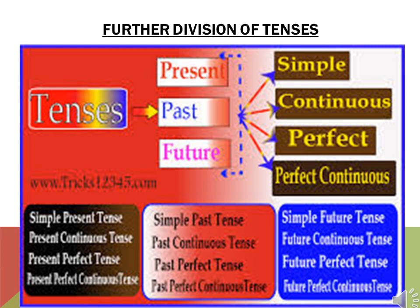For past, number 1 is simple past tense, then past continuous tense, then past perfect tense, and the last is past perfect continuous tense. Same with future tense: simple future tense, future continuous tense, future perfect tense, and future perfect continuous tense. So children, here we see 4 under present, 4 under past, and 4 under future.